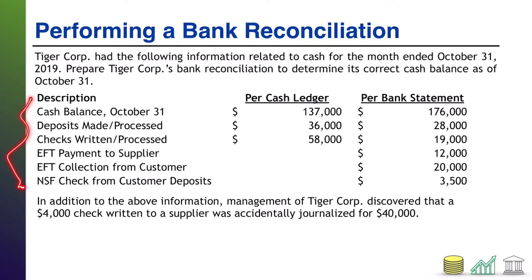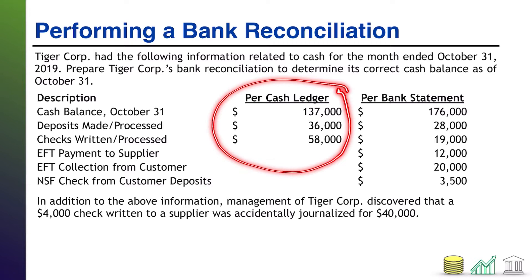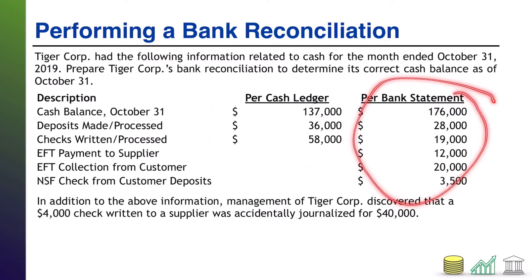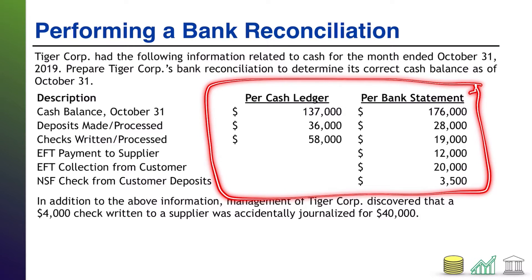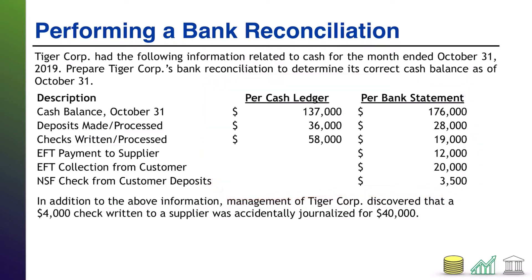Notice the presentation here. I give you some information and then two columns: the current information per the cash ledger and the current information per the bank statement. This right here is not a bank reconciliation — this is just the list of information provided. The goal of the problem is to use that information to make your bank reconciliation. Notice also there is some additional info down at the bottom to take into consideration. Try pausing the video, pull out a blank sheet of paper, do this on your own. When you're ready, come on back and I'll walk you through the solution.